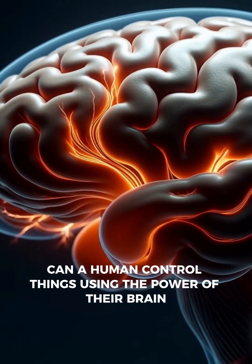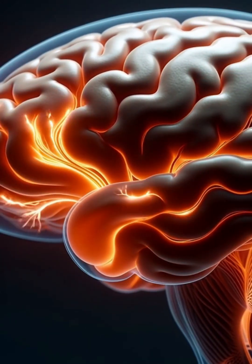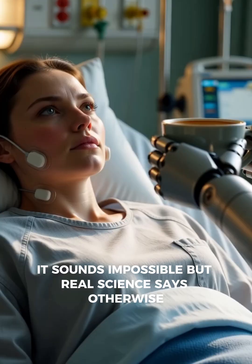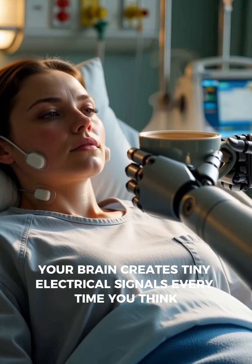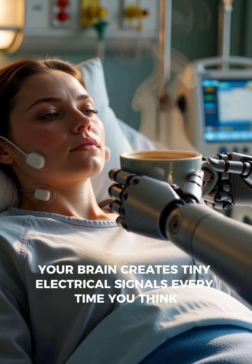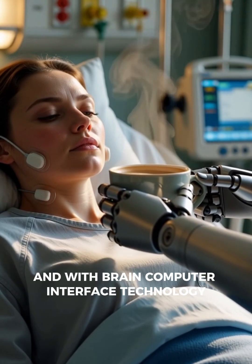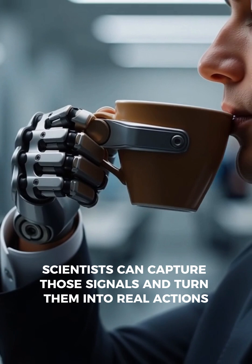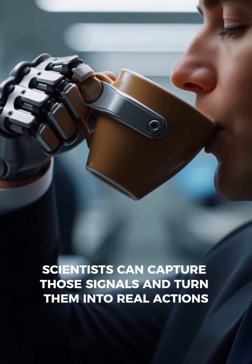Can a human control things using the power of their brain? It sounds impossible, but real science says otherwise. Your brain creates tiny electrical signals every time you think. And with brain-computer interface technology, scientists can capture those signals and turn them into real actions.